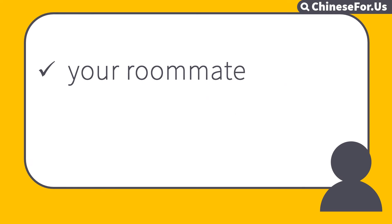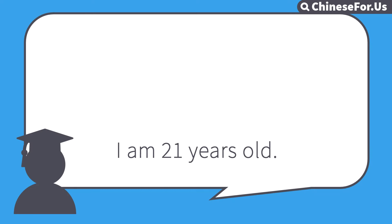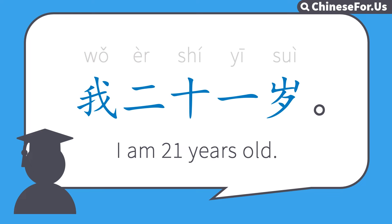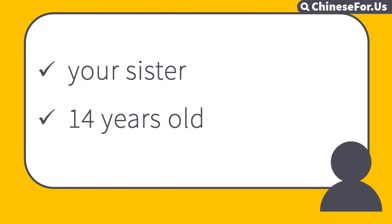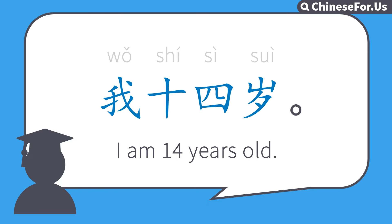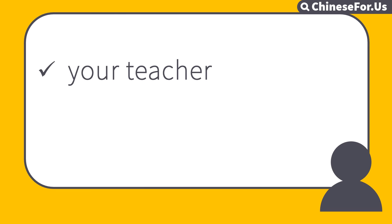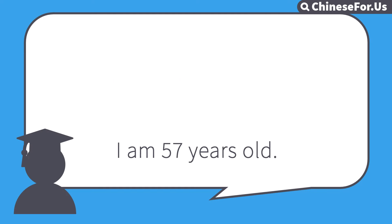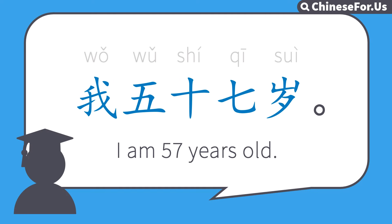And here's your roommate. He's 21 years old. If he's going to introduce his age, what would he say? 我二十一岁. And here's your sister. She's 14 years old. What would she say? 我十四岁. And here's your teacher. He's 57. What would he say? 我五十七岁. Very good.